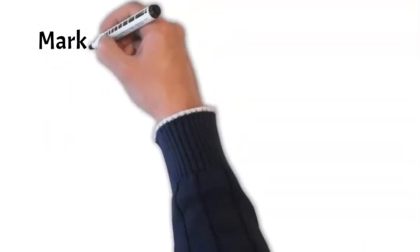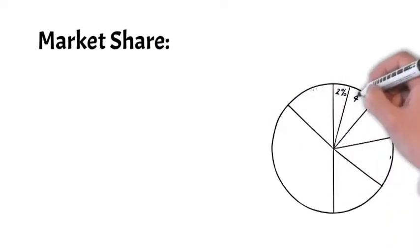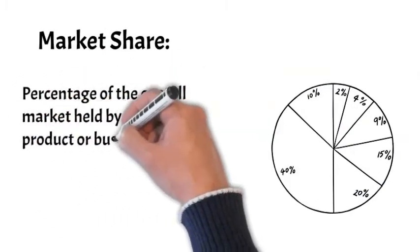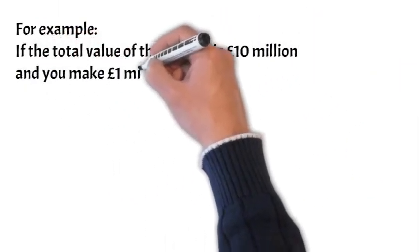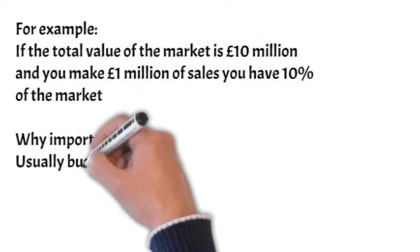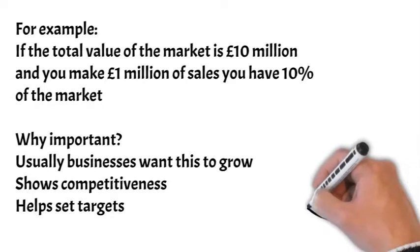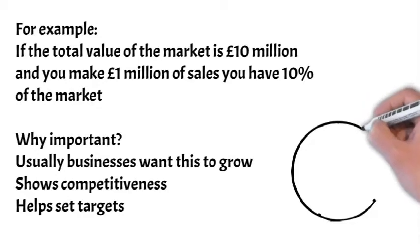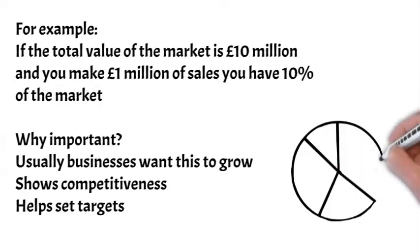The next calculation is for market share. And that is the percentage of the overall market held by one particular business or a product or a particular brand. For example, if the total value of a market is £10 million and you make £1 million worth of sales, you own 10% of that market. Why is this important? Because as time goes by, you want to be able to claim more and more of that market. You want to see your share grow. And this tells you how competitive you are. If you see your market share shrinking, that means other people are entering the market and taking your market share away from you.